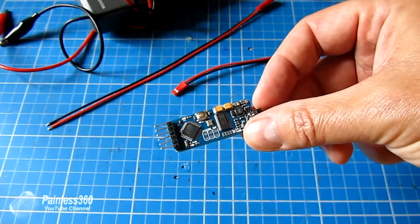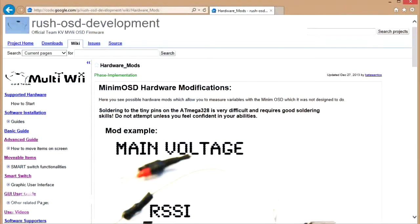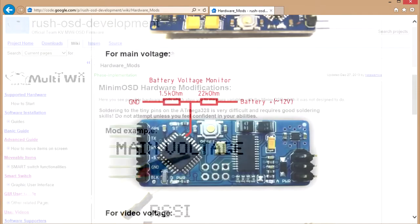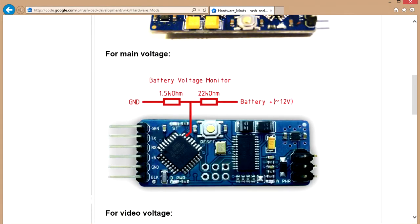Now the things I'm going to be talking about here and demoing, full descriptions are available from the website at code.google.com/p/rush-osd-development/wiki/hardware_mods. As you can see, there is a little resistor bridge that you have to set up and you have to do some soldering to make this work, because unless you've done this the voltage input will always read zero. If you scroll up and down this website, you'll also see how you do the same kind of thing for measuring current draw, video battery, and other bits and bobs. I'm just going to show you how to do the main voltage and give you an idea of what you're doing with these bits and pieces.